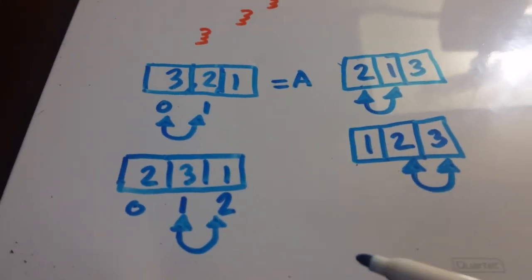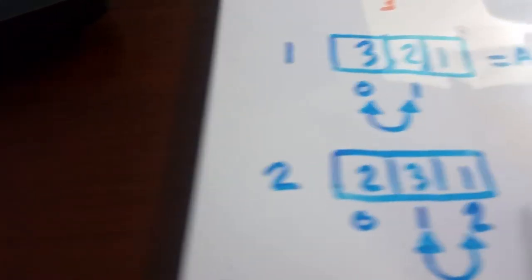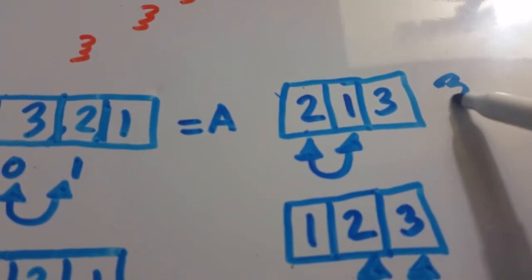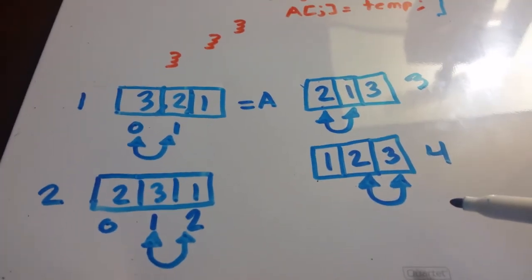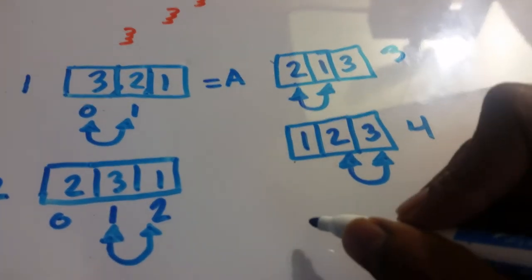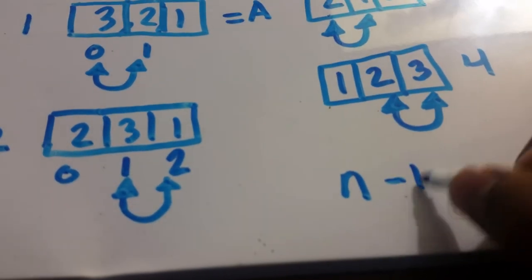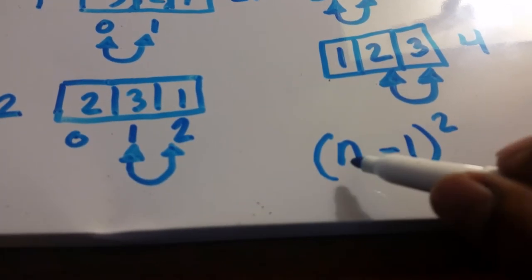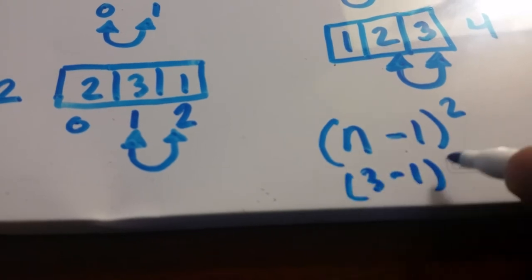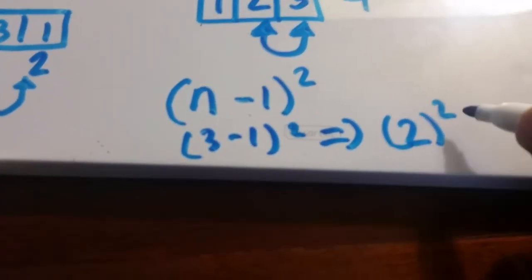So how many times did we iterate through this loop? One, two, three, four times. We could think of this as n minus one squared. Since n is three, we get three minus one squared, which is two squared, equal to four. That matches exactly.